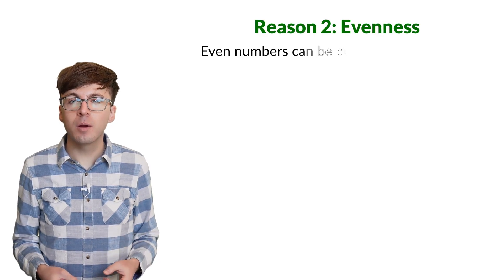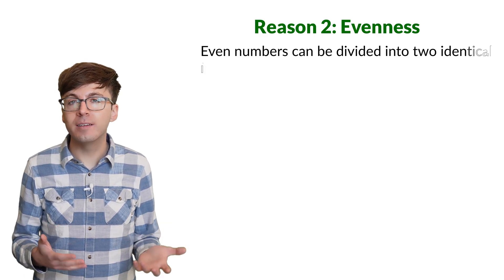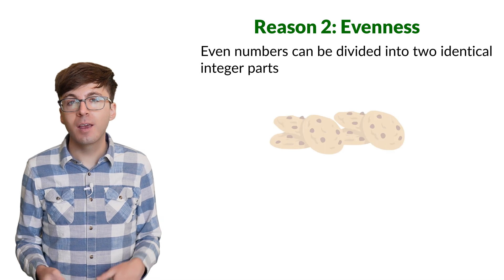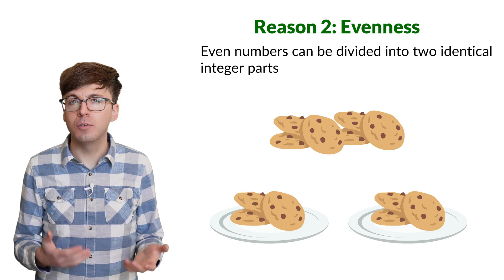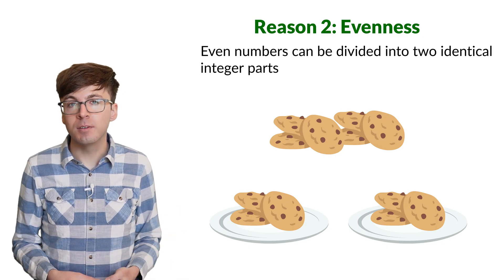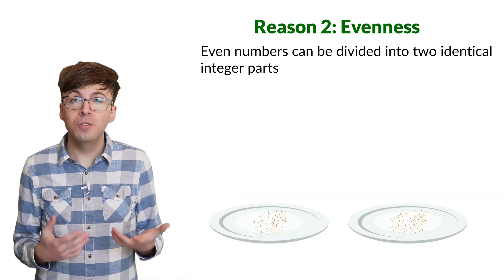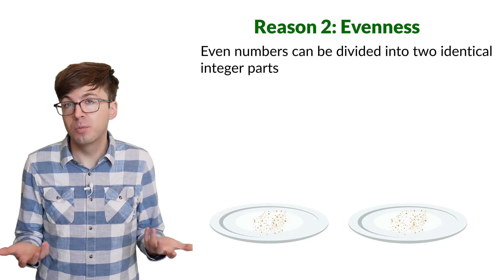Reason 2. Even numbers are the numbers that can be divided into two identical integer parts. Like we can split 6 into 3 and 3, a fair division of 6 into two parts. So 6 is even. We can split 0 into 0 and 0, so 0 is even.